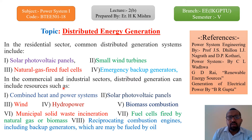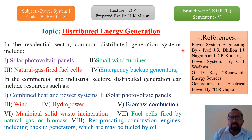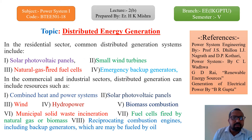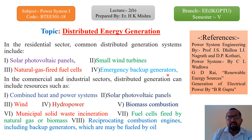Types of distributed energy generation are generally two: residential and commercial/industrial. In the residential sector, common distributed generation systems include: first, solar photovoltaic panels that you can locate on your rooftop to get energy during peak load; second, small wind turbines for irrigation or lighting purposes; third, natural gas-fired fuel cells to store energy during off-peak time and utilize it during peak time; and fourth, emergency backup generators installed in homes to meet power requirements during peak load.